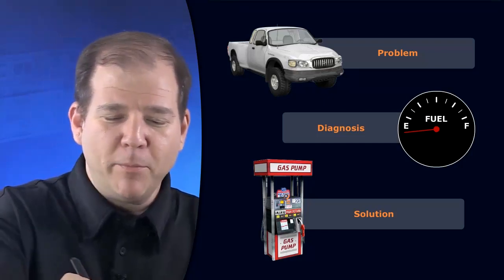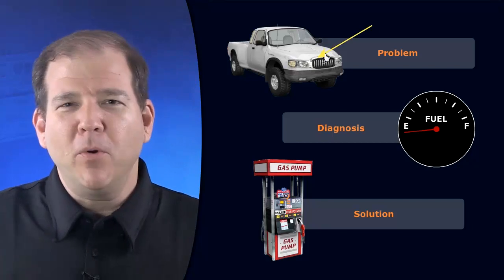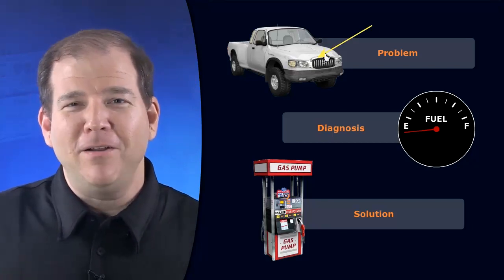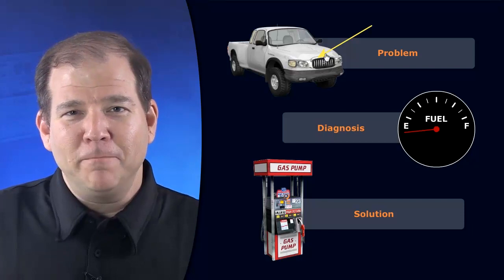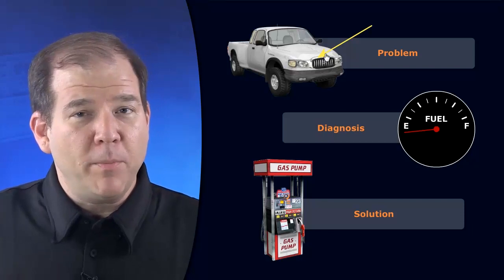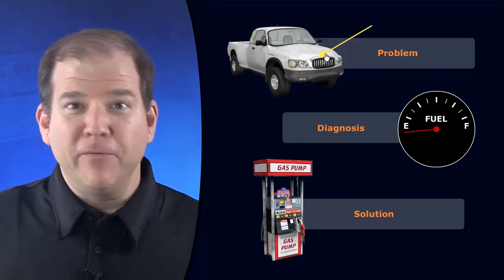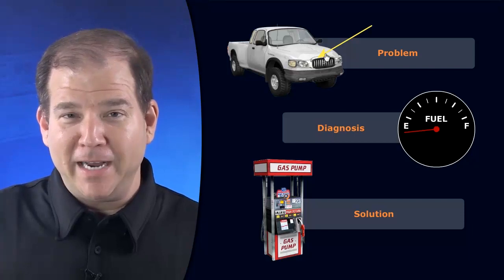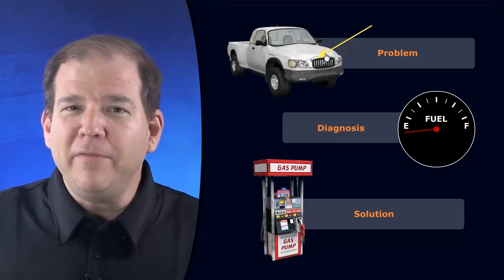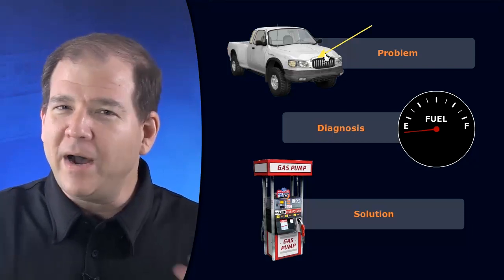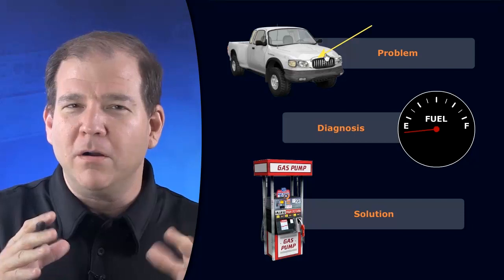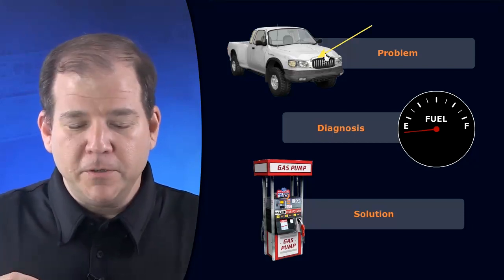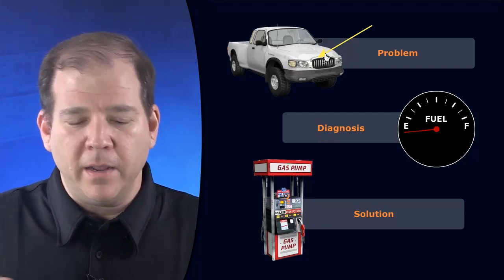We have a problem report, and the problem report is: the truck does not go. It's broken down along the side of the highway. Notice the problem report is not that every car is broken down or the interstate is at a standstill. No, it's one vehicle. We've isolated the problem — it's this one truck that doesn't go. And we start to investigate what might be going on.